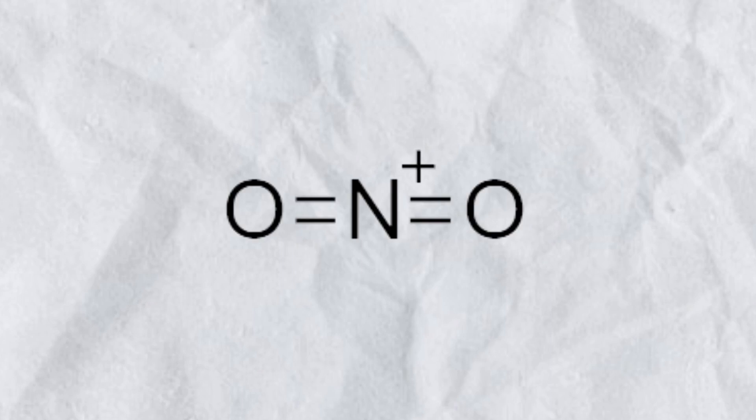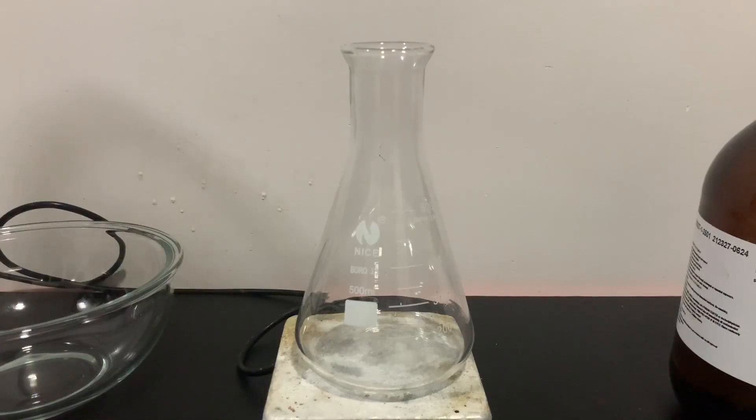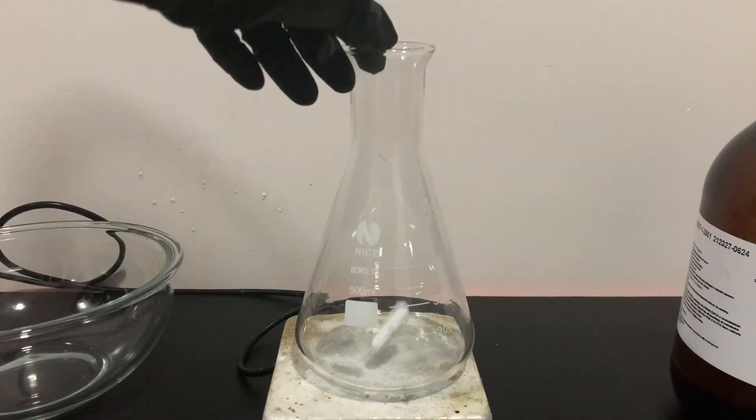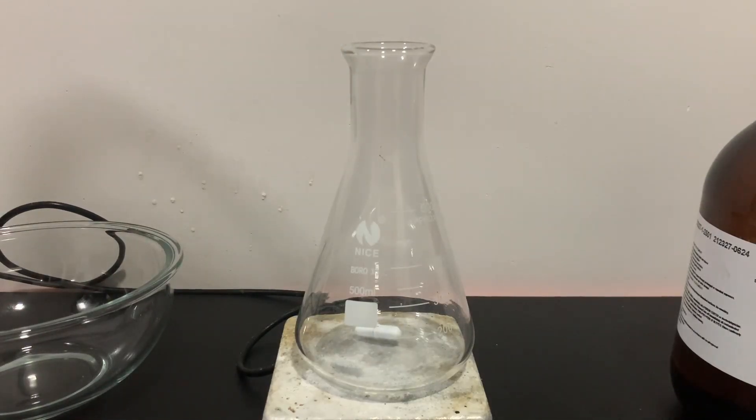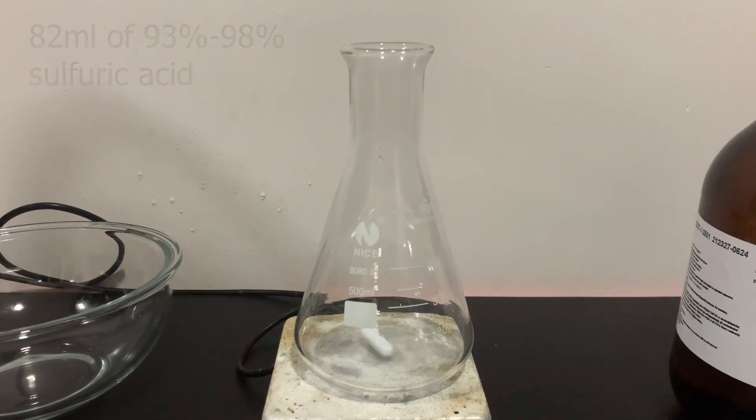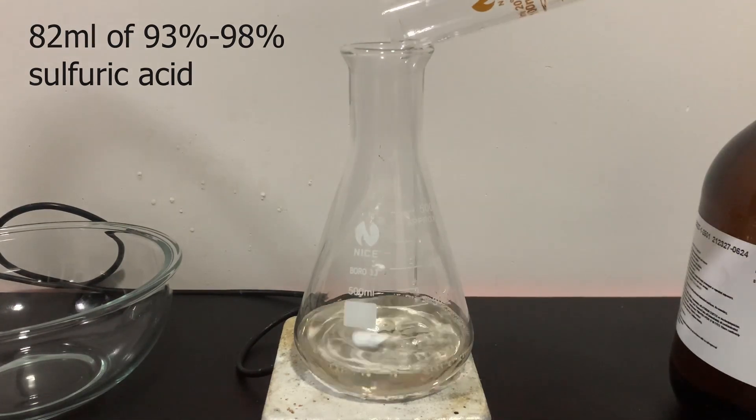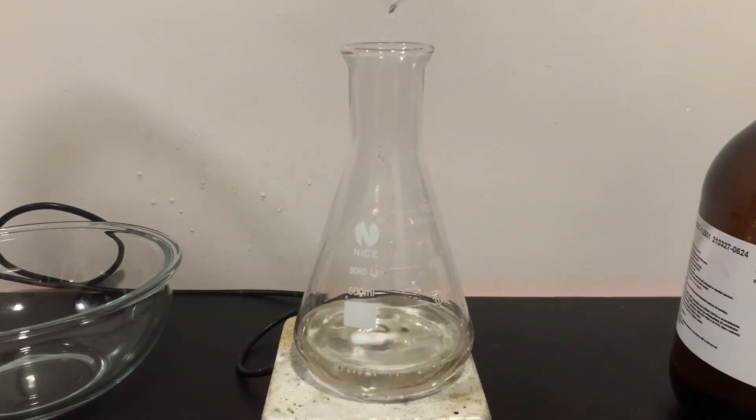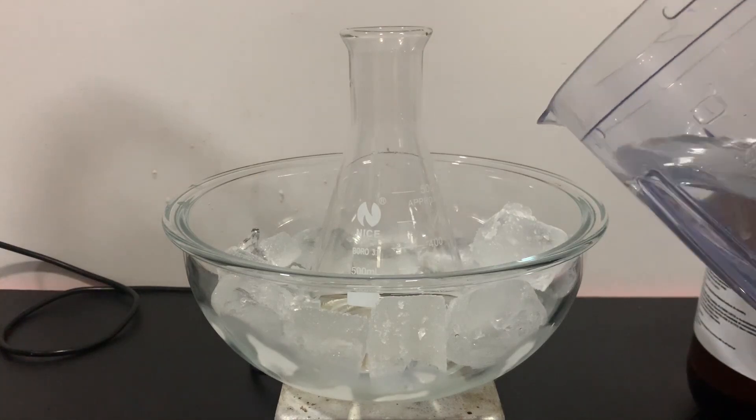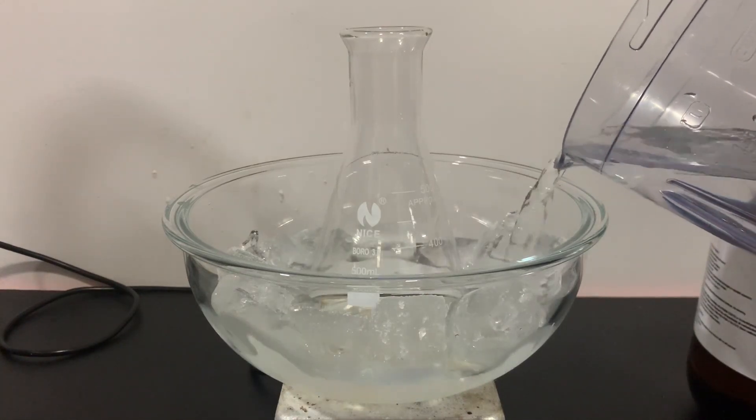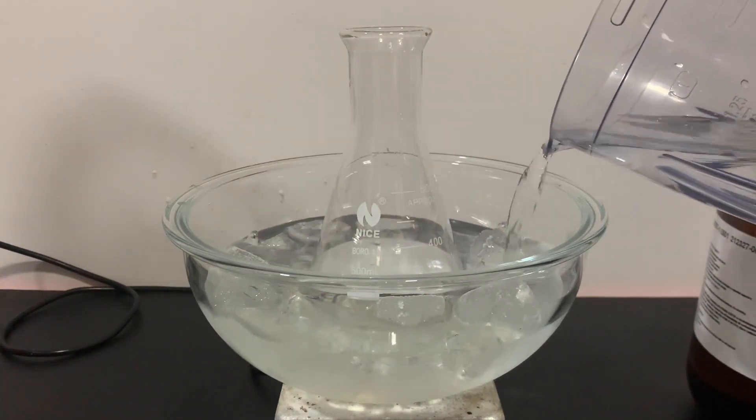To make the nitrobenzene, we are going to have to firstly form the nitronium ion. This was easily done by adding 82ml of concentrated sulfuric acid into a 500ml flask. The flask is then cooled with an ice bath as the next addition will be highly exothermic.